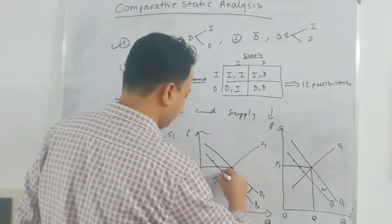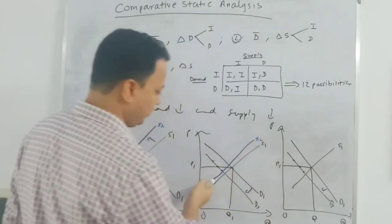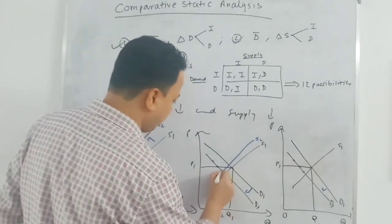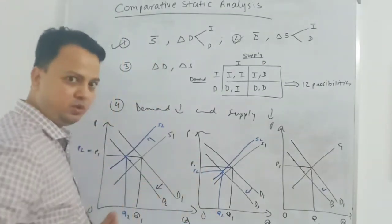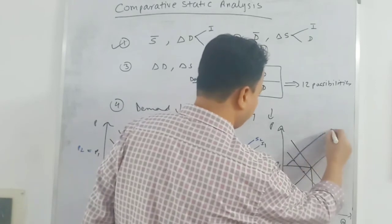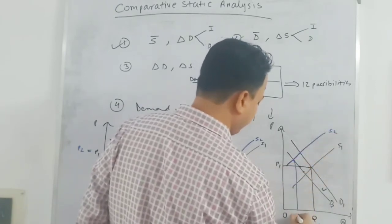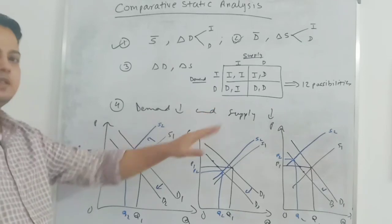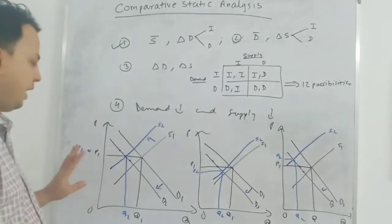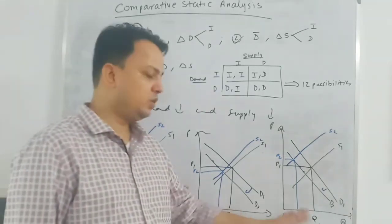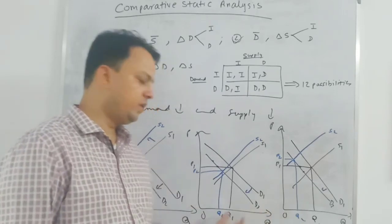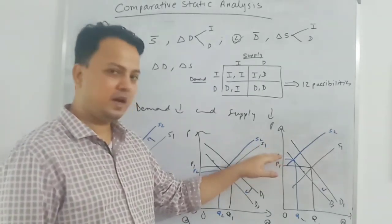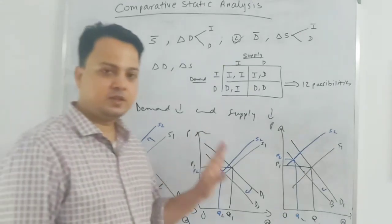In the second graph at the new equilibrium, price is lower and quantity is lower. In the third graph, when the shift in the supply curve is quite large, quantity is lower and price is higher. So the conclusion when demand decreases and supply decreases together: at the new equilibrium, equilibrium quantity will be lower for sure. Equilibrium price can remain the same, it can be lower, or it can be higher, depending upon the relative shifts in demand and supply.